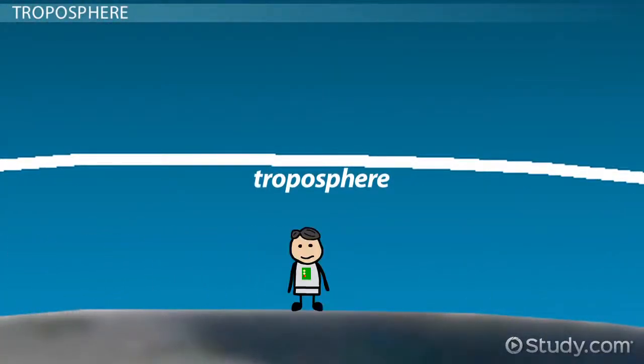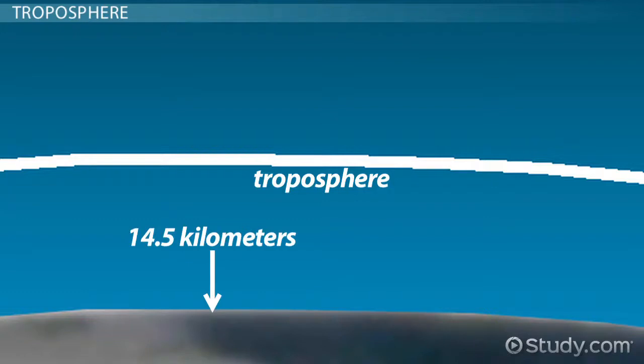We breathe the air of the troposphere with its mix of mostly nitrogen with some oxygen and carbon dioxide, and we experience the weather that occurs in its highest reaches. In fact, the troposphere extends 14.5 kilometers above sea level, meaning that even while in a commercial airliner, we never leave the troposphere.